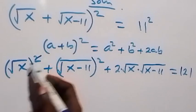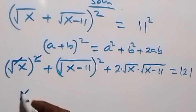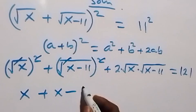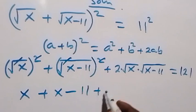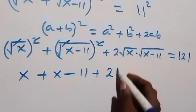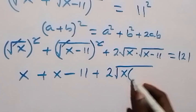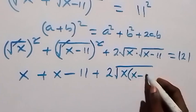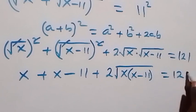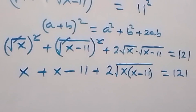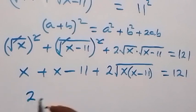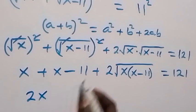That's 11 times 11, which is 121. Simplifying further: the square cancels the square root, giving us x plus x minus 11, then plus 2 times root of x multiplied by x minus 11, equals 121. Simplifying further, x plus x gives us 2x.